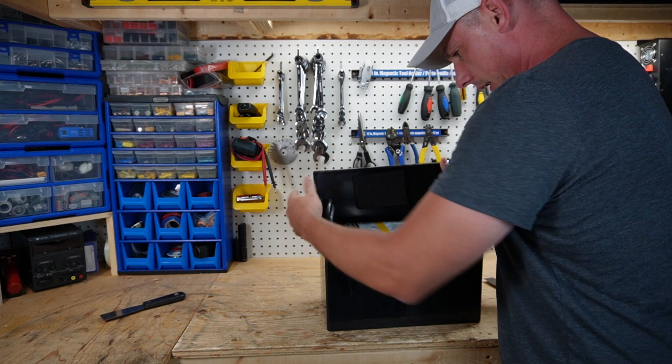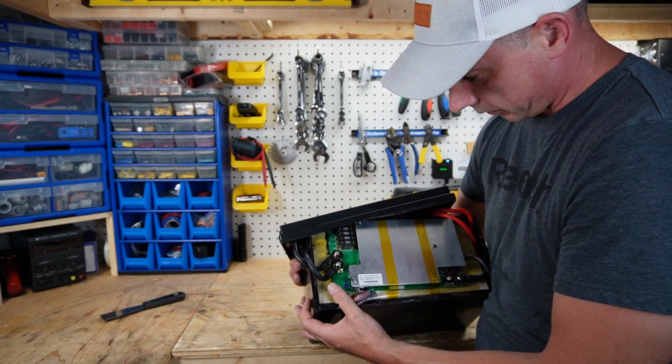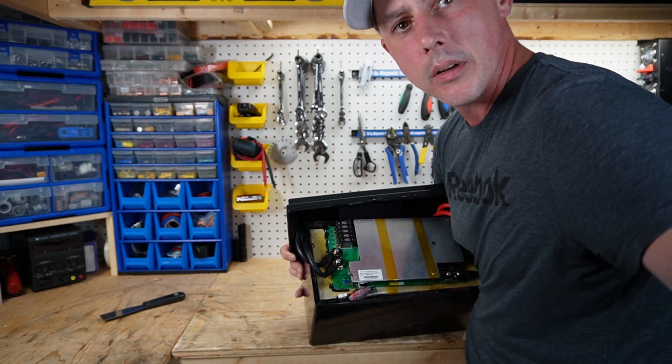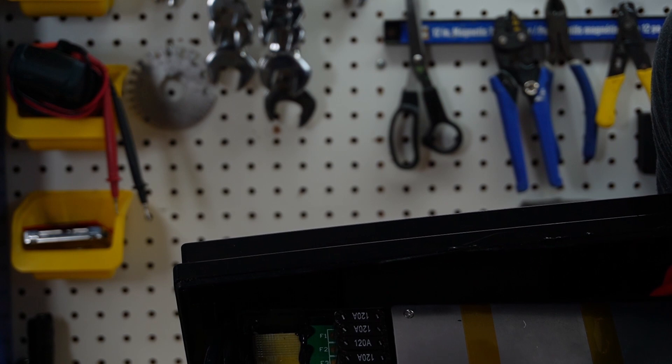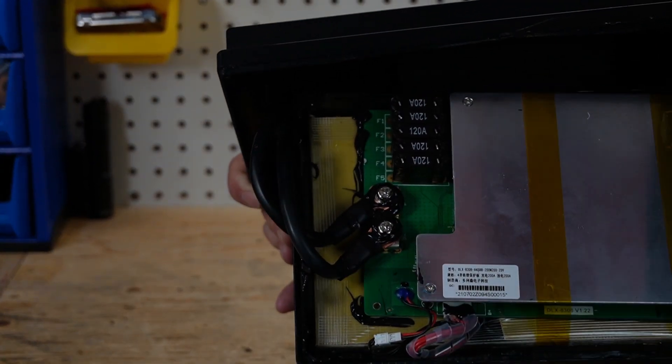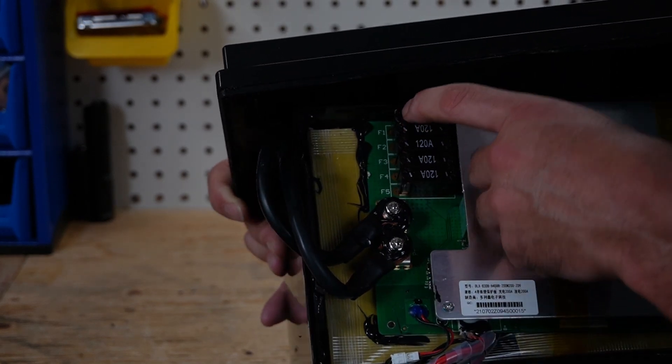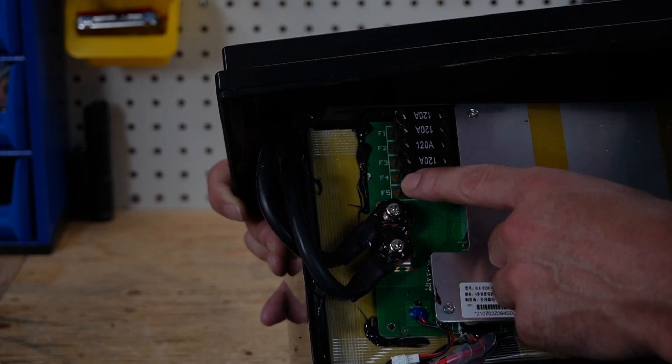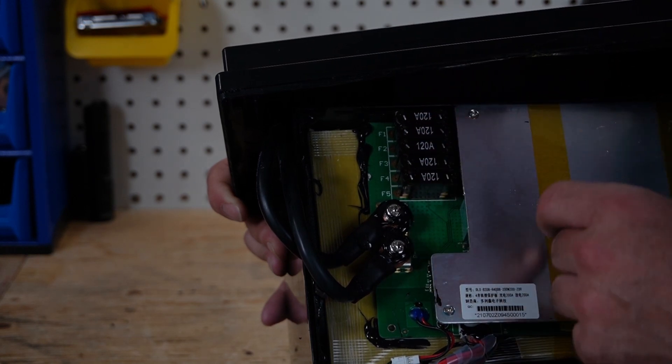Right off the bat, I'm looking at what appears to be fuses. Right here, it looks like we have fuses, and they're labeled F1, F2, F3, F4, and F5. Now, I think this means FET1, FET2, FET3, FET4, and FET5. These are 120-amp fuses.